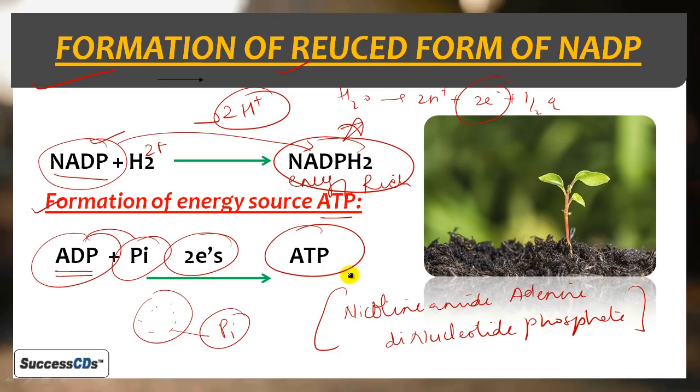So in light reaction, you should know - it's occurring in chloroplast grana where chlorophyll is present. First step is water breaking into 2H positive, 2 electrons, and half O2. O2 is released, 2H positive converts NADP to NADPH2, and 2 electrons help convert ADP and phosphate into ATP. Light reaction produces energy sources NADPH2 and ATP which will help in dark reaction.